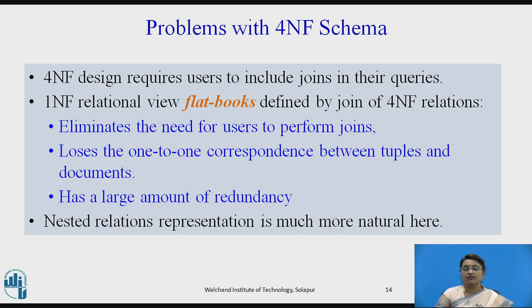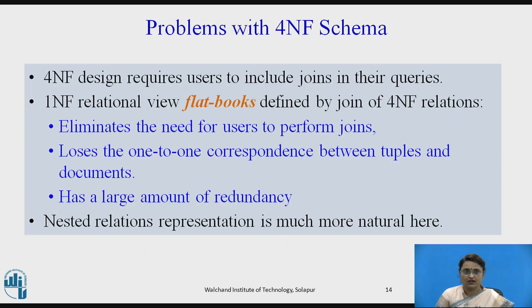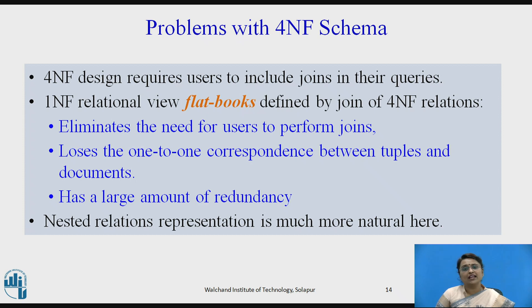The problems with the 4NF schema are: it requires users to write joins in queries since there are now many separate tables. When a 1NF relational view is defined over the 4NF relations, it eliminates the need for joins but loses the one-to-one correspondence between tuples, since a single tuple previously held all the data. It also introduces large amounts of redundancy. The nested relation representation is much more natural and is therefore considered the better version.